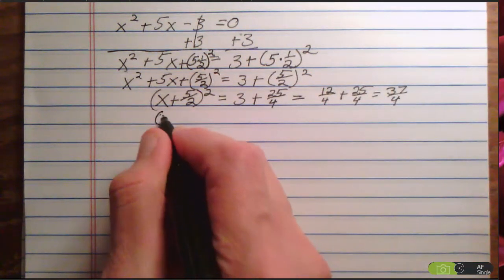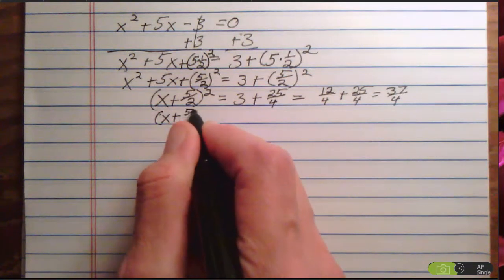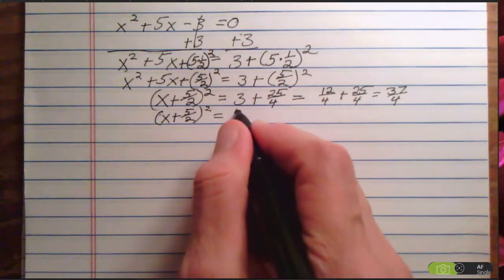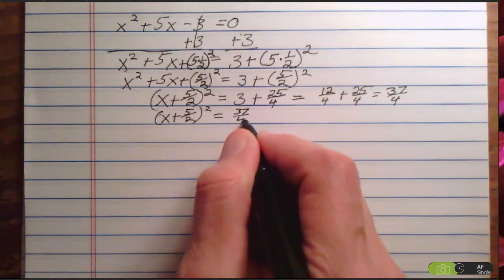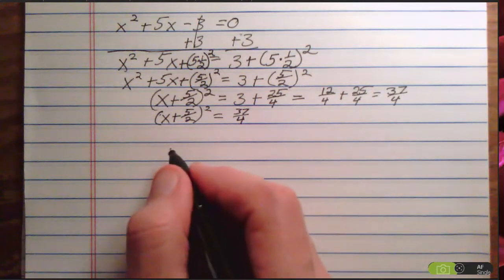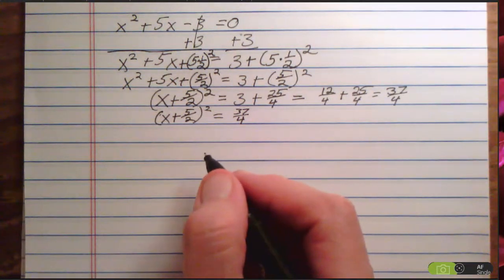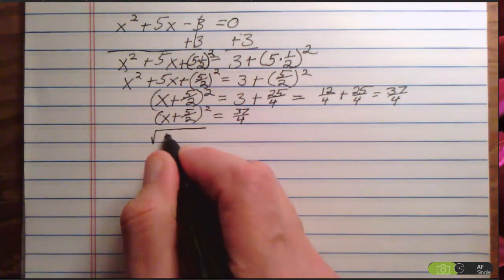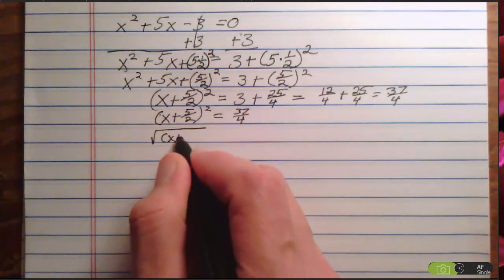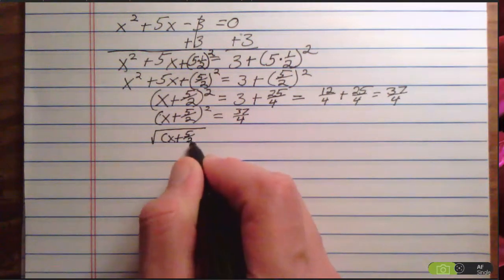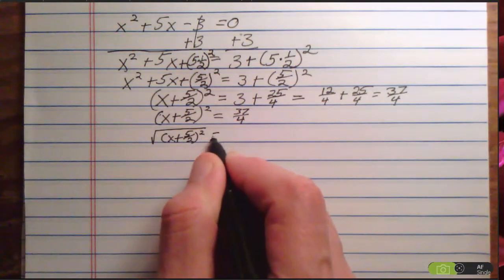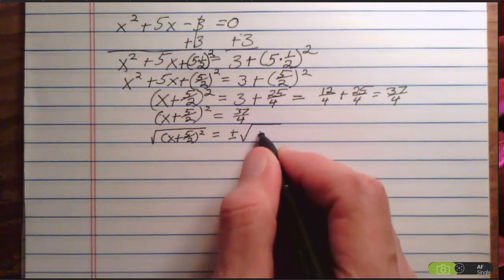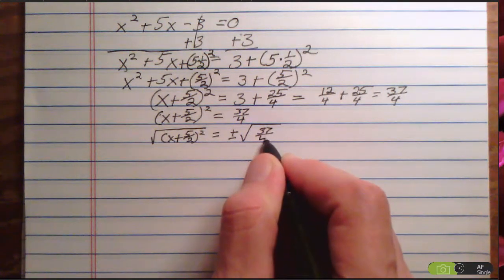So (x + 5/2)² = 37/4. Now I'm going to take the square root of both sides of the equation: √[(x + 5/2)²] = ±√(37/4).